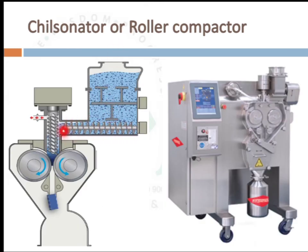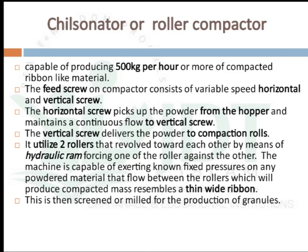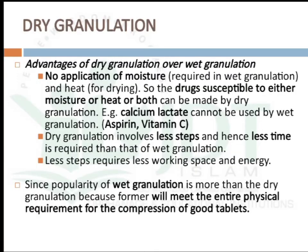In the chilsonator, a horizontal feed and vertical feed work together: the horizontal feed takes material to the vertical feed, which takes it to the compaction rolls to produce a hard sheet. No moisture is applied, so drugs susceptible to moisture or heat — such as calcium lactate, aspirin, and vitamins — can be made by this method. Dry granulation involves fewer steps and is less time-consuming.